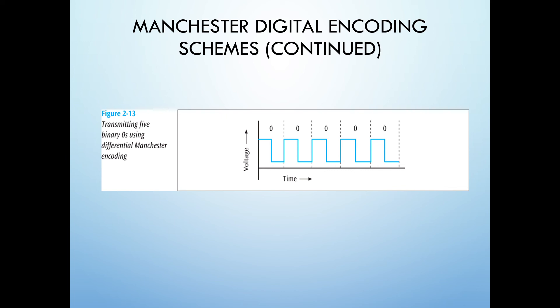In Manchester encoding, to transmit a 1, the signal changes from low to high in the middle of the interval. And to transmit a 0, the signal changes from high to low in the middle of the interval. The transition is always in the middle — a 1 is a low to high transition and a 0 is a high to low transition.